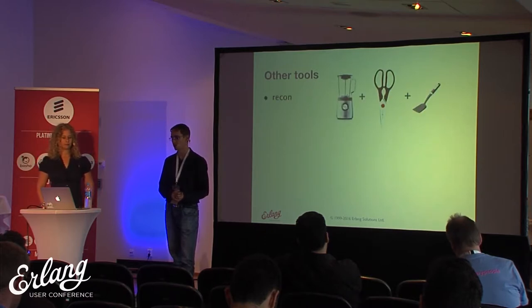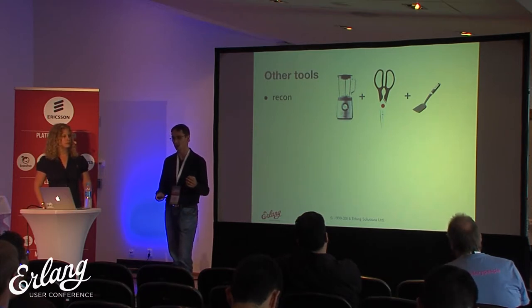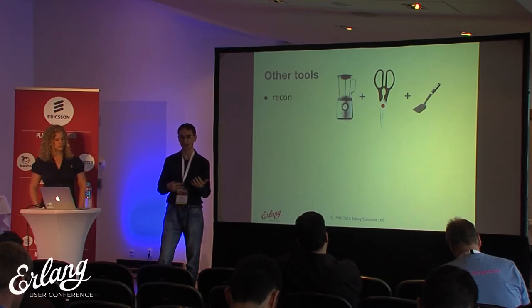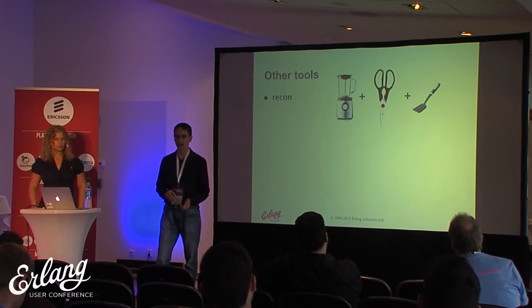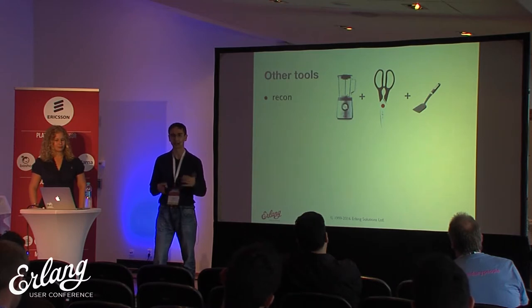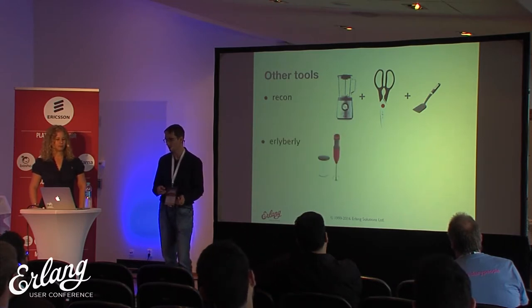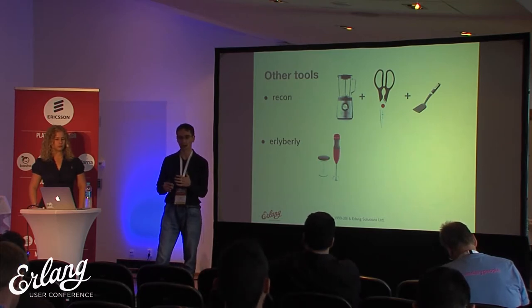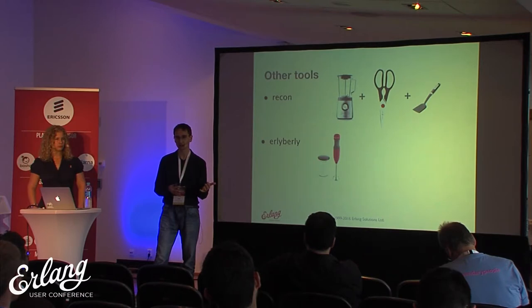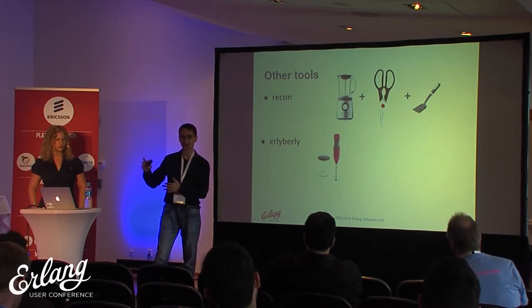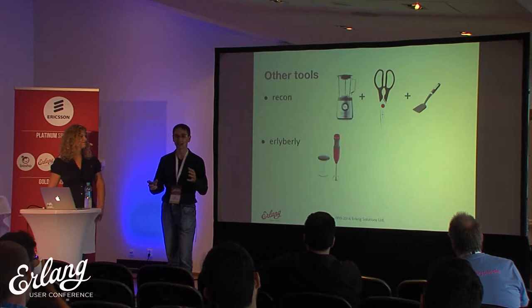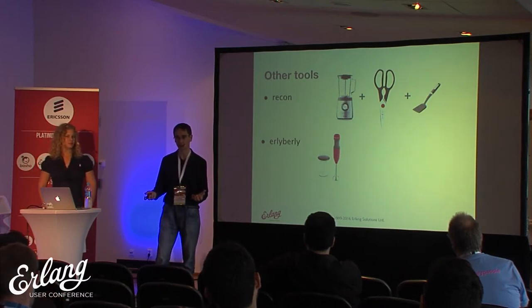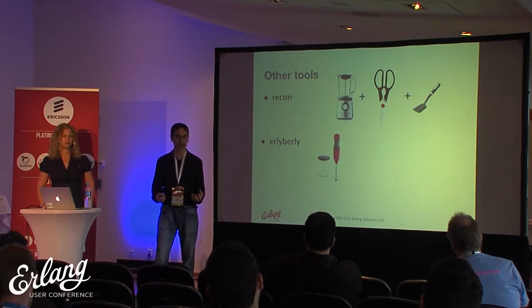There are two other tools I'd like to mention briefly. One is Recon, which also does tracing in a safe way and gives you tools to get information safely about processes, including dealing with BEAM allocators and memory fragmentation. Finally, there is EarlyBurly, which is best in tracing and has a nice graphical interface — there will be a talk in the next slot about it. The reason it's not a blender but an immersion blender is that it's not as safe as Recon or Redbug because it doesn't have overload protection, so it's not recommended for production nodes, only for development.